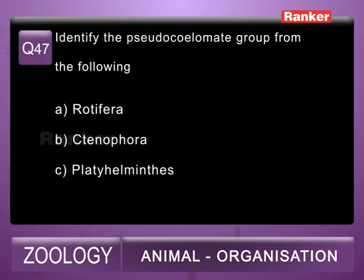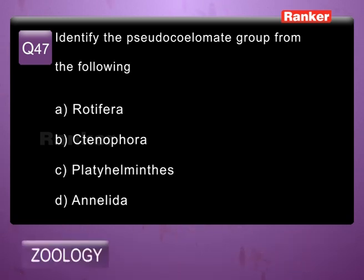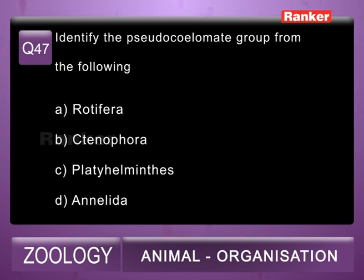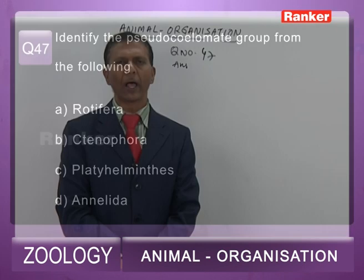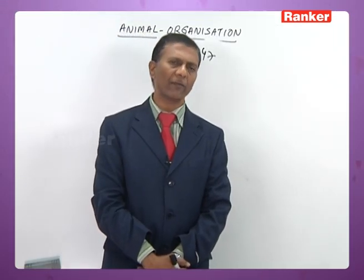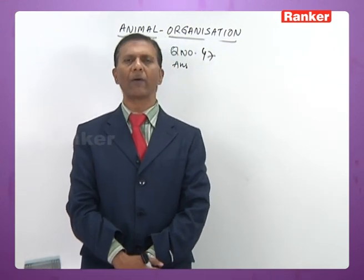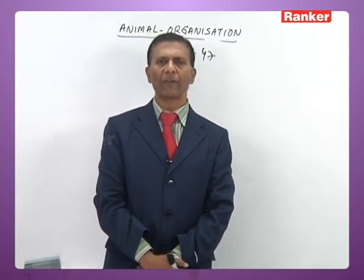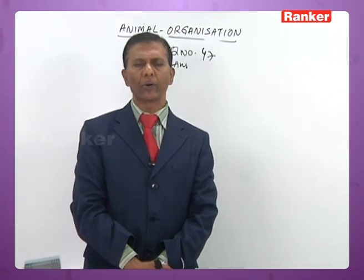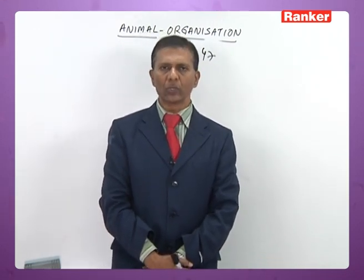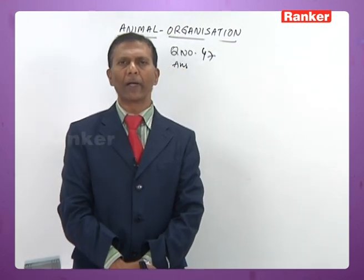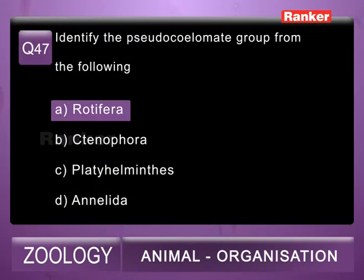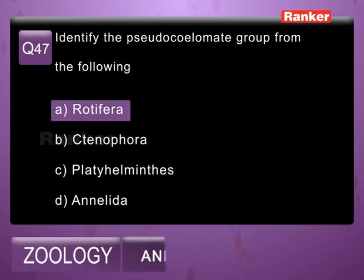Question 47: identify the pseudocoelomate group from the following — A) Rotifera, B) Ctenophora, C) Platyhelminthes, D) Annelida. There are about six to seven pseudocoelomate phyla: Rotifera, Kinorhyncha, Nematomorpha, Nematoda, Acanthocephala, Entoprocta. All pseudocoelomate phyla are placed under superphylum Aschelminthes. Among these options, the correct answer is A, Rotifera. So the 47th question correct answer is A.